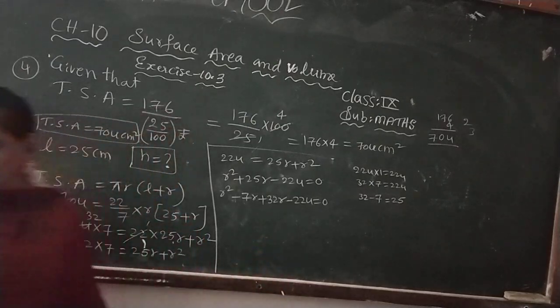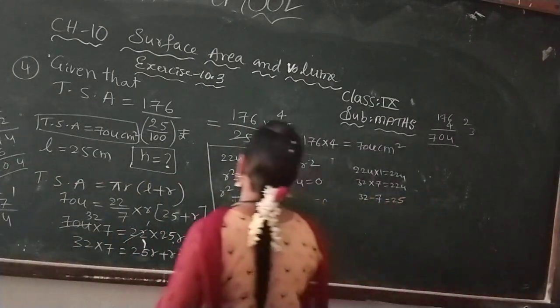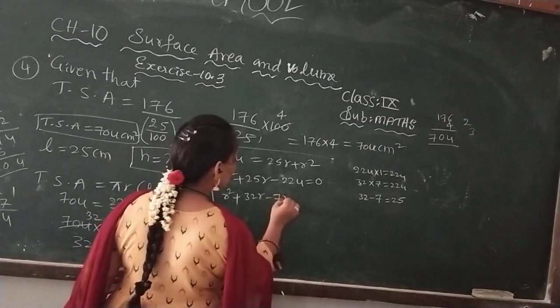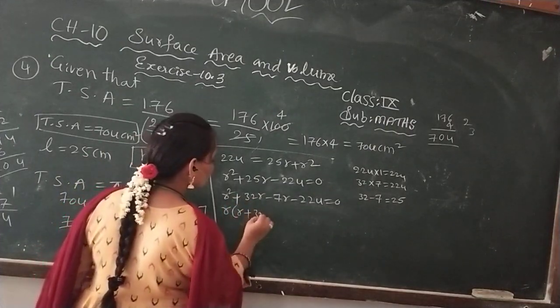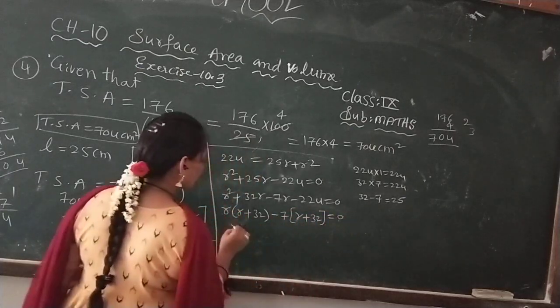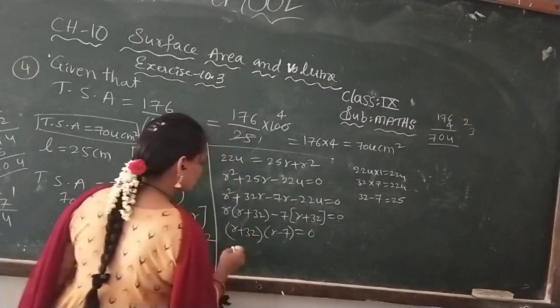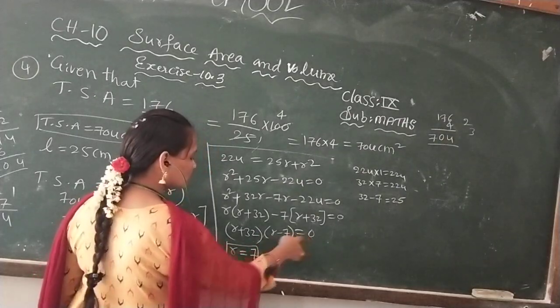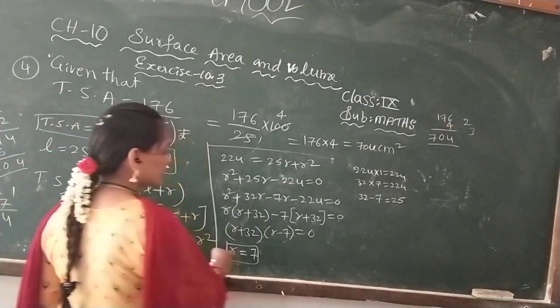I will change it to R square plus 32R minus 7R minus 224 equals 0. R in these two terms, take R common. So R(R plus 32) minus 7(R plus 32) equals 0. (R plus 32)(R minus 7) equals 0. So R equals 7. R minus 7 equals 0, that is R equals 7. R equals minus 32 we should not consider. So R equals 7. Radius is 7.